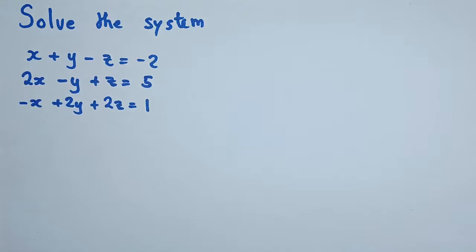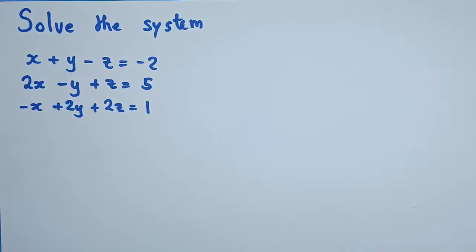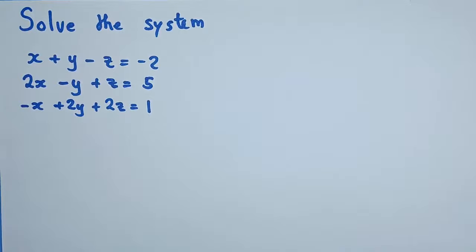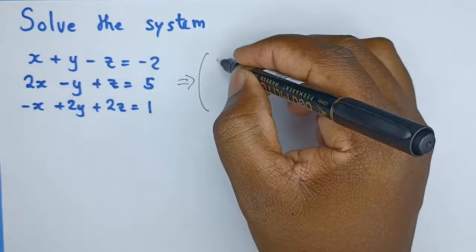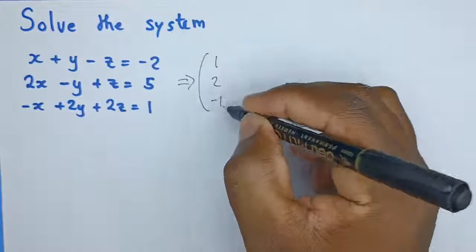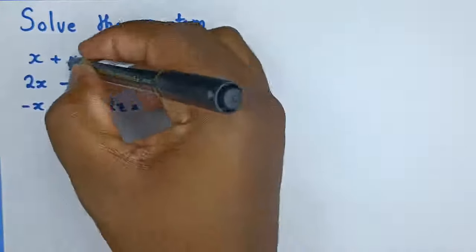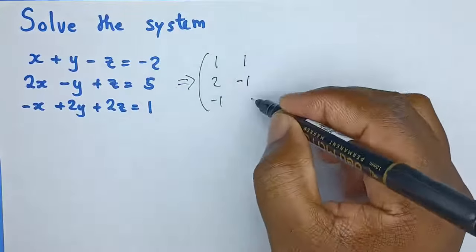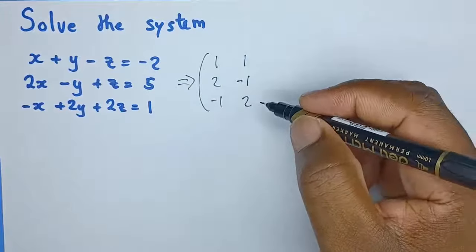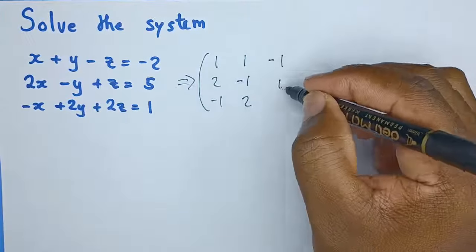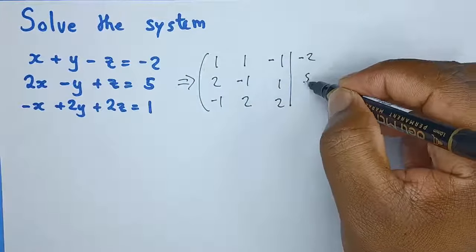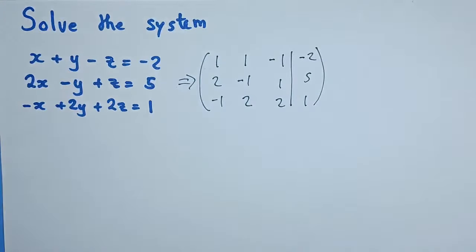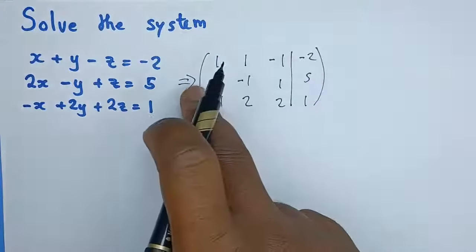So we have these three equations and we want to apply the method of Gaussian elimination to solve them. Let's put them in matrix form. We'll have coefficients for x: 1, 2, negative 1. Coefficients for y: 1, negative 1, and 2. Coefficients for z: negative 1, 1, and 2. Then we'll write down the right-hand side values. Now remember, we need 1s in the major diagonal and we need zeros below it, so let's apply some row operations.